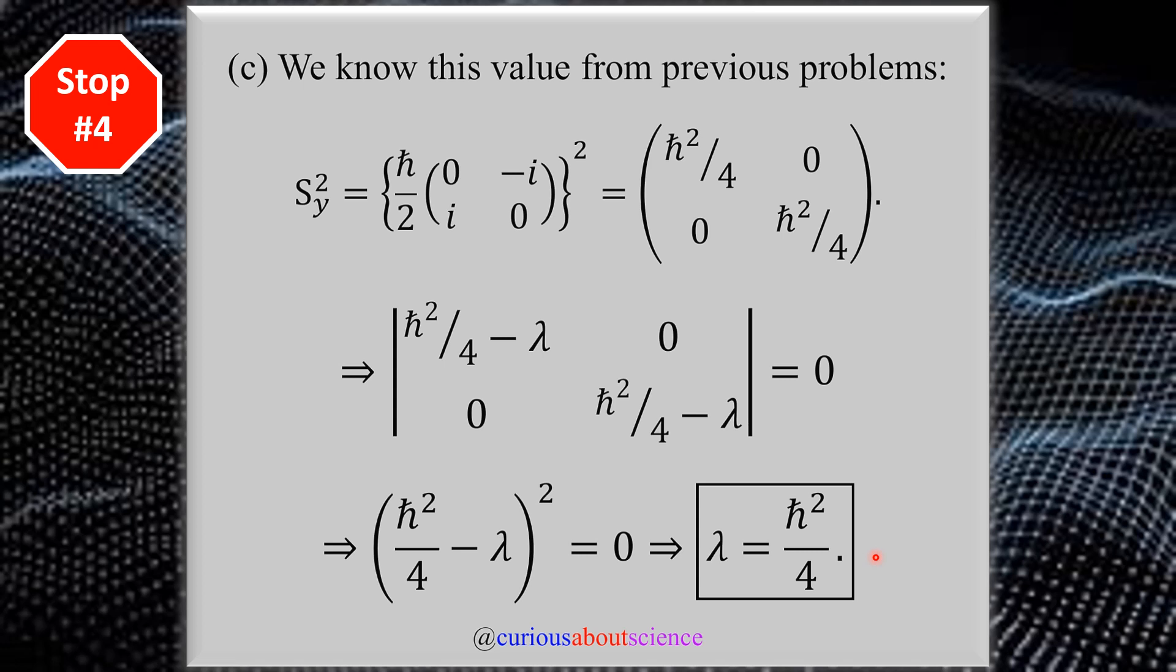We knew this from before with the expectation values when we were tinkering with that in the last two questions. But because this is the only eigenvalue that exists, we know that the probability of this thing being measured is 1 or 100%. That's pretty good to know and pretty weird considering how crazy the rest of quantum mechanics is, but when we square it, we're guaranteed to get this measurement. Pretty cool, I'd say.